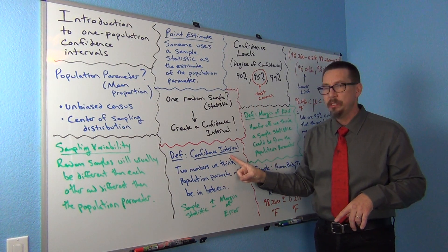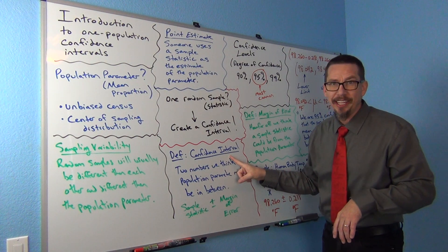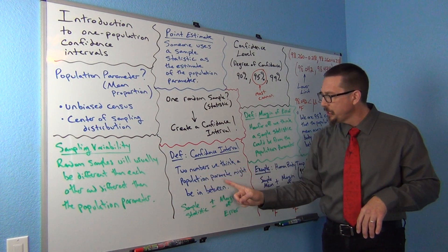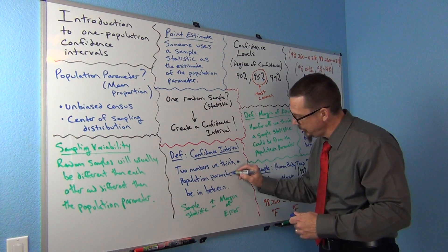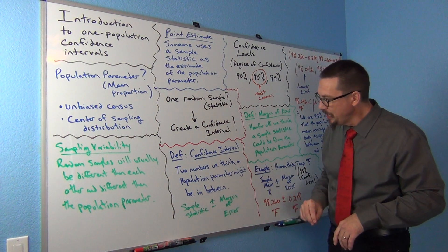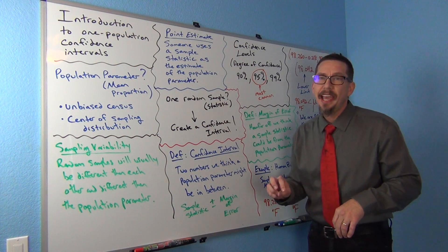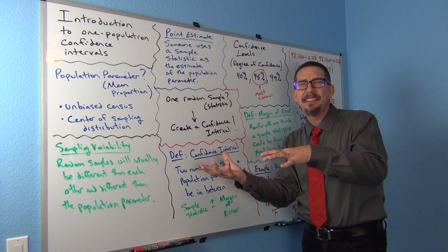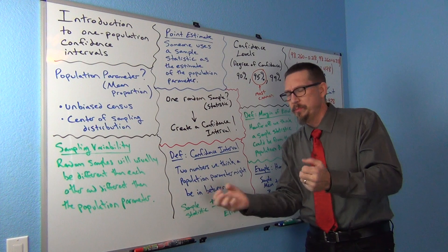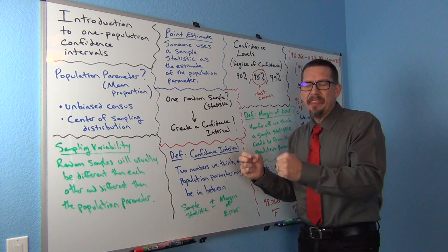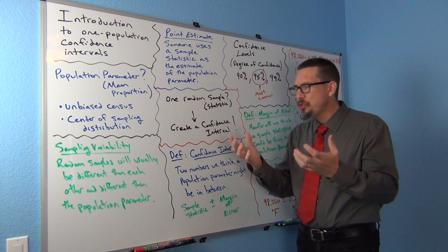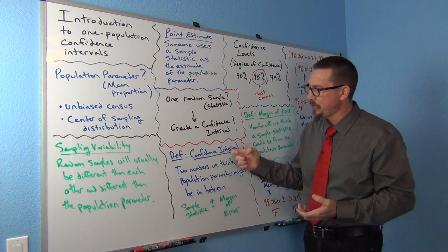Here's a big definition — everything in stats is about vocabulary. A confidence interval is two numbers we think a population parameter might be in between. So in other words, I don't know what the population weight is, but I think it's between 25 kilograms and 29 kilograms. I don't know what the population percentage is, but I think it's somewhere between 3.5% and 5.8%. Two numbers that you think the population could be in between — that's the idea of a confidence interval.